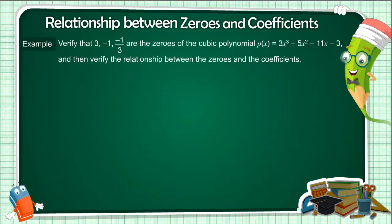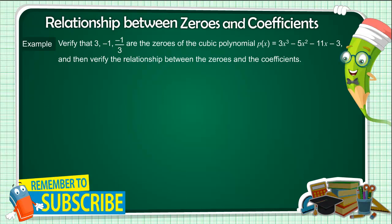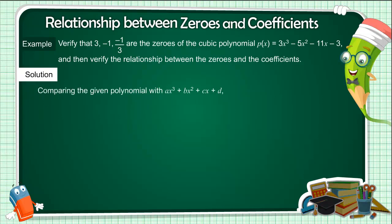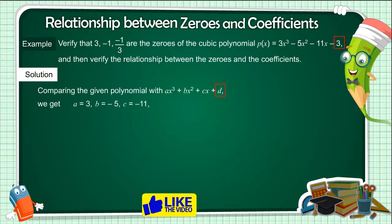Example: Verify that 3, minus 1, and minus 1/3 are the zeros of the cubic polynomial p(x) equals 3x³ minus 5x² minus 11x minus 3, and verify the relationship between the zeros and the coefficients. Solution: Comparing the given polynomial with ax³ plus bx² plus cx plus d, we get a equals 3, b equals minus 5, c equals minus 11, and d equals minus 3.